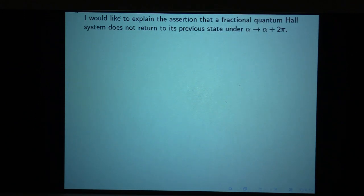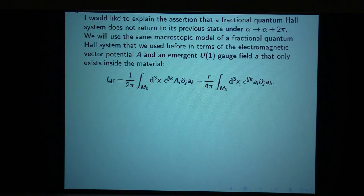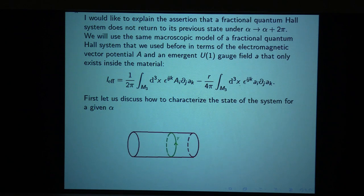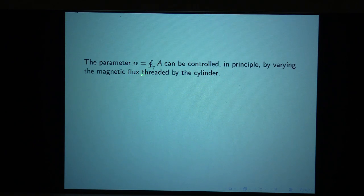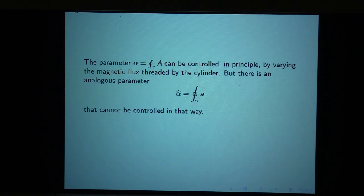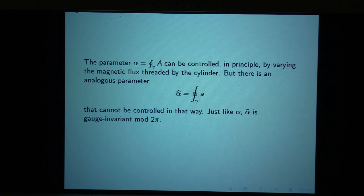I want to explain why a fractional quantum Hall system does not return to its original state when alpha increases by 2 pi. We'll go more deeply into the fractional quantum Hall case tomorrow. We use the same macroscopic model in terms of an electromagnetic potential A and a U(1) gauge field little a that only exists inside the material. We recall that alpha was defined as the integral of big A around the path gamma, controlled by varying the magnetic flux threaded by the cylinder. There's an analogous parameter alpha-hat, which is gauged modulo 2 pi just like alpha.